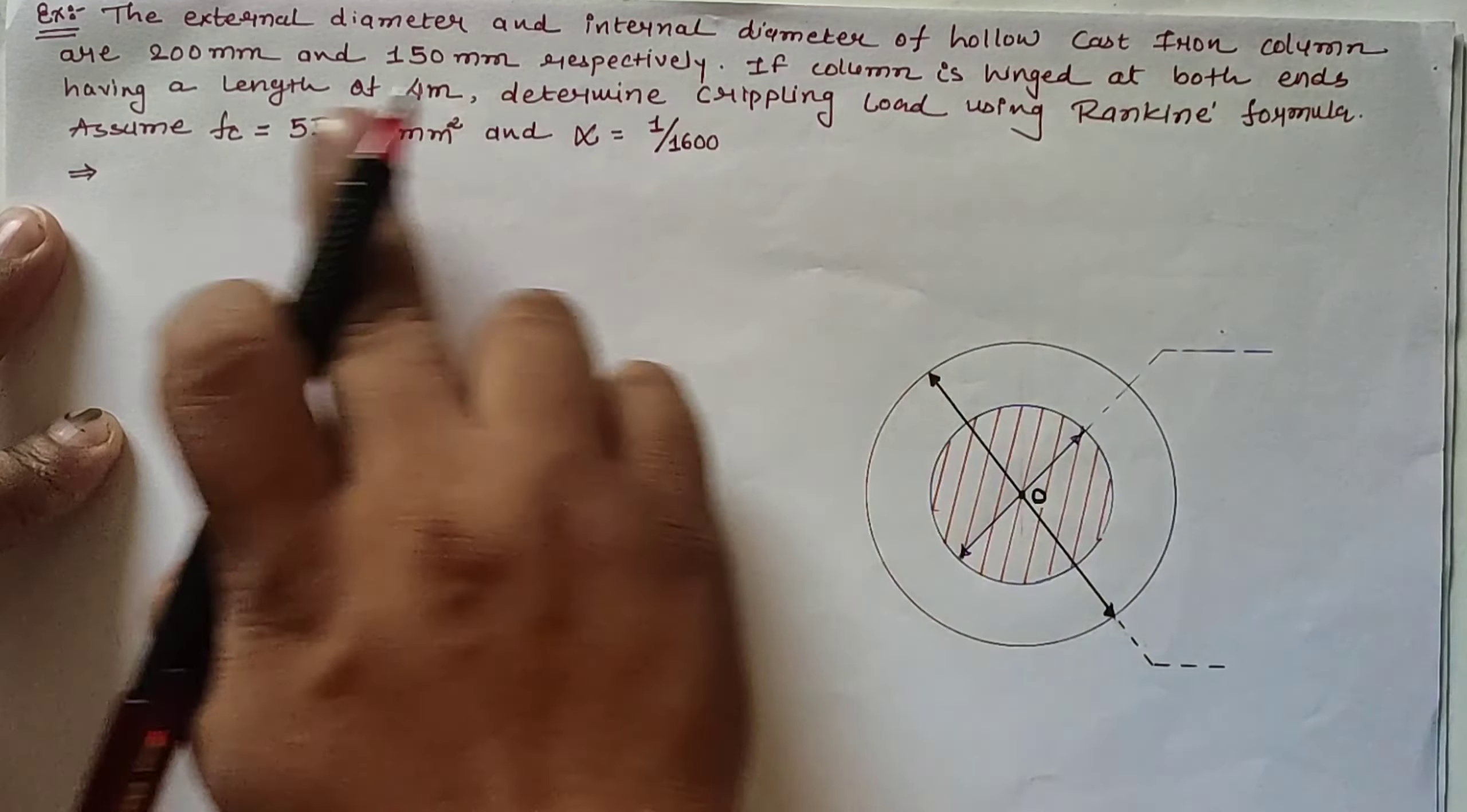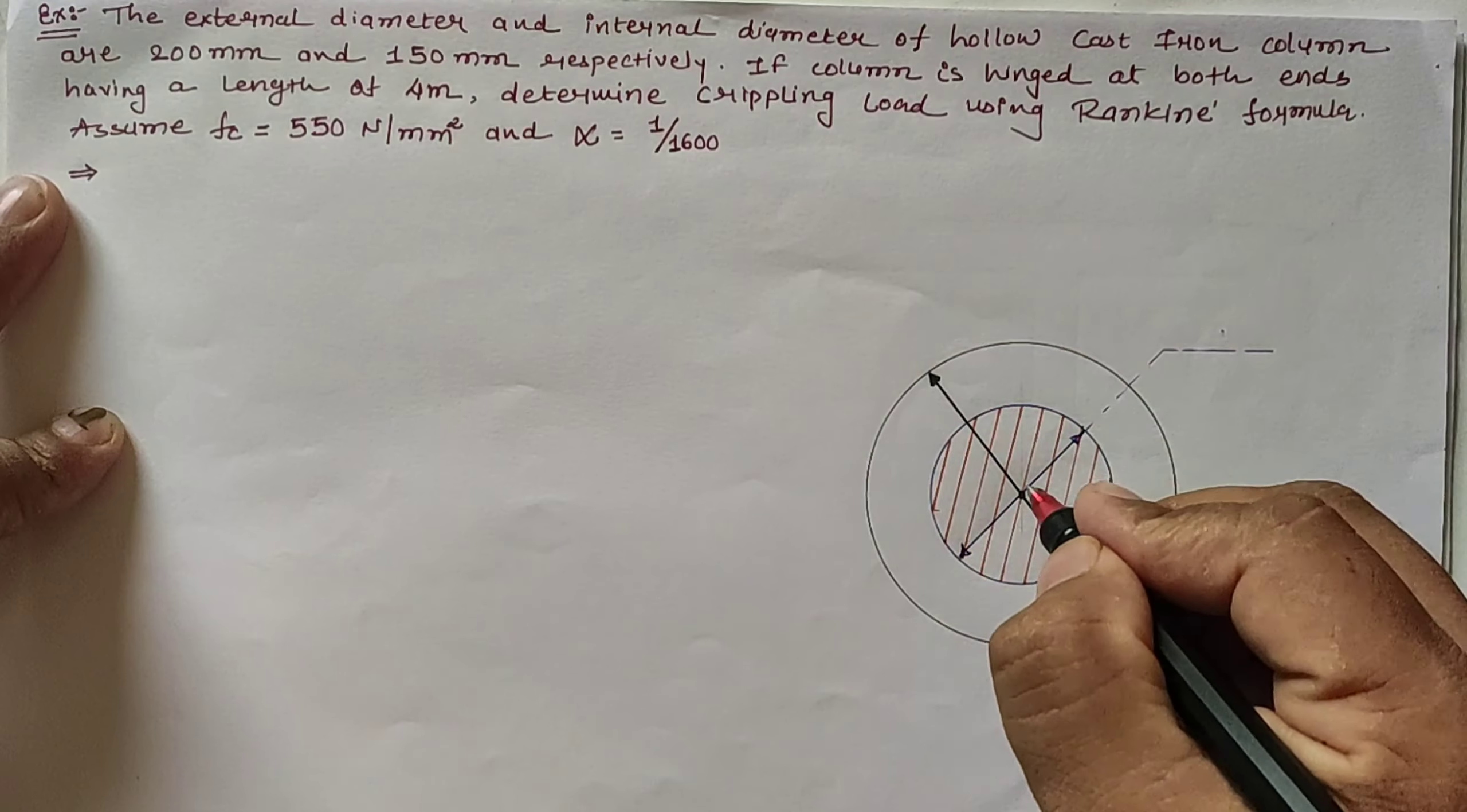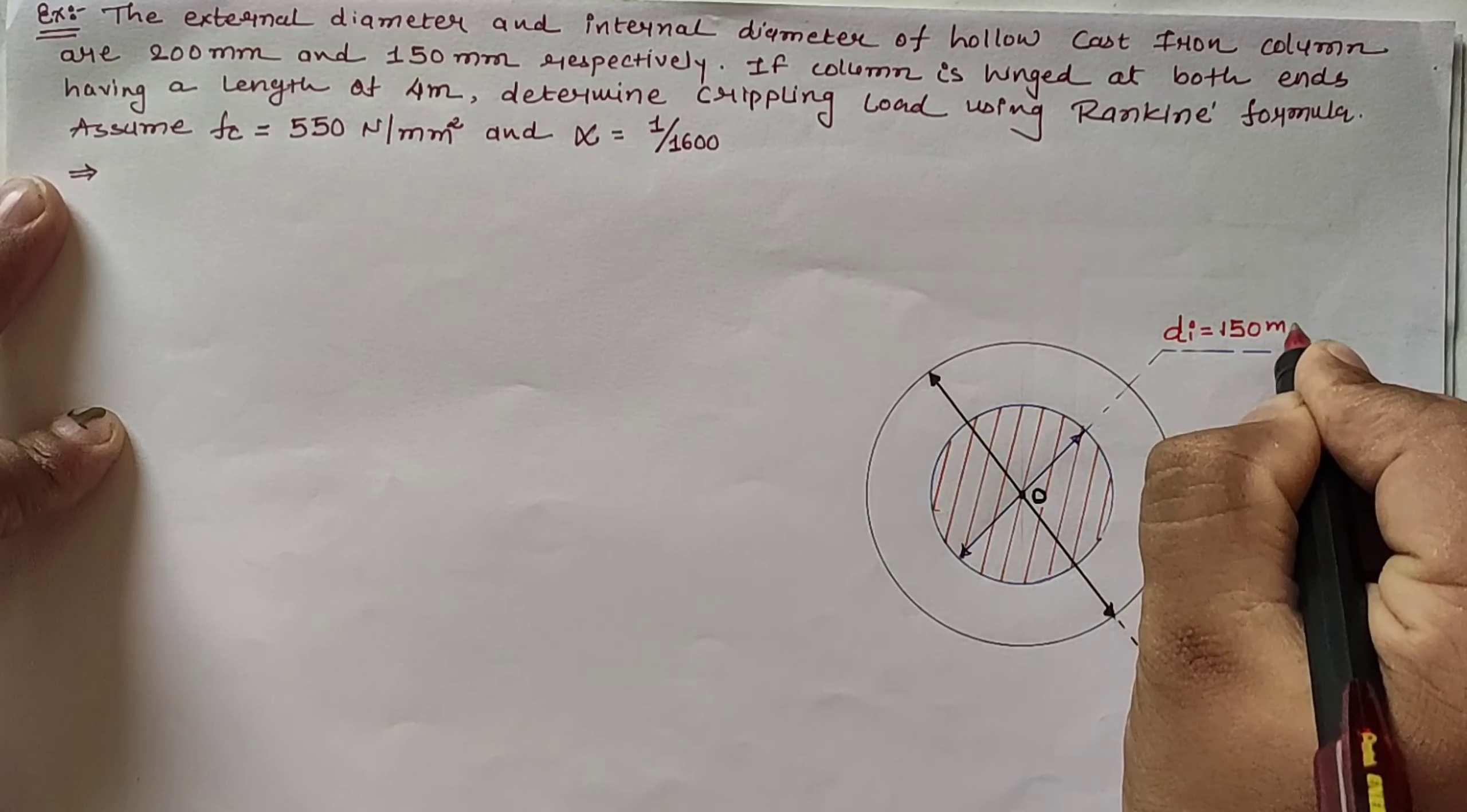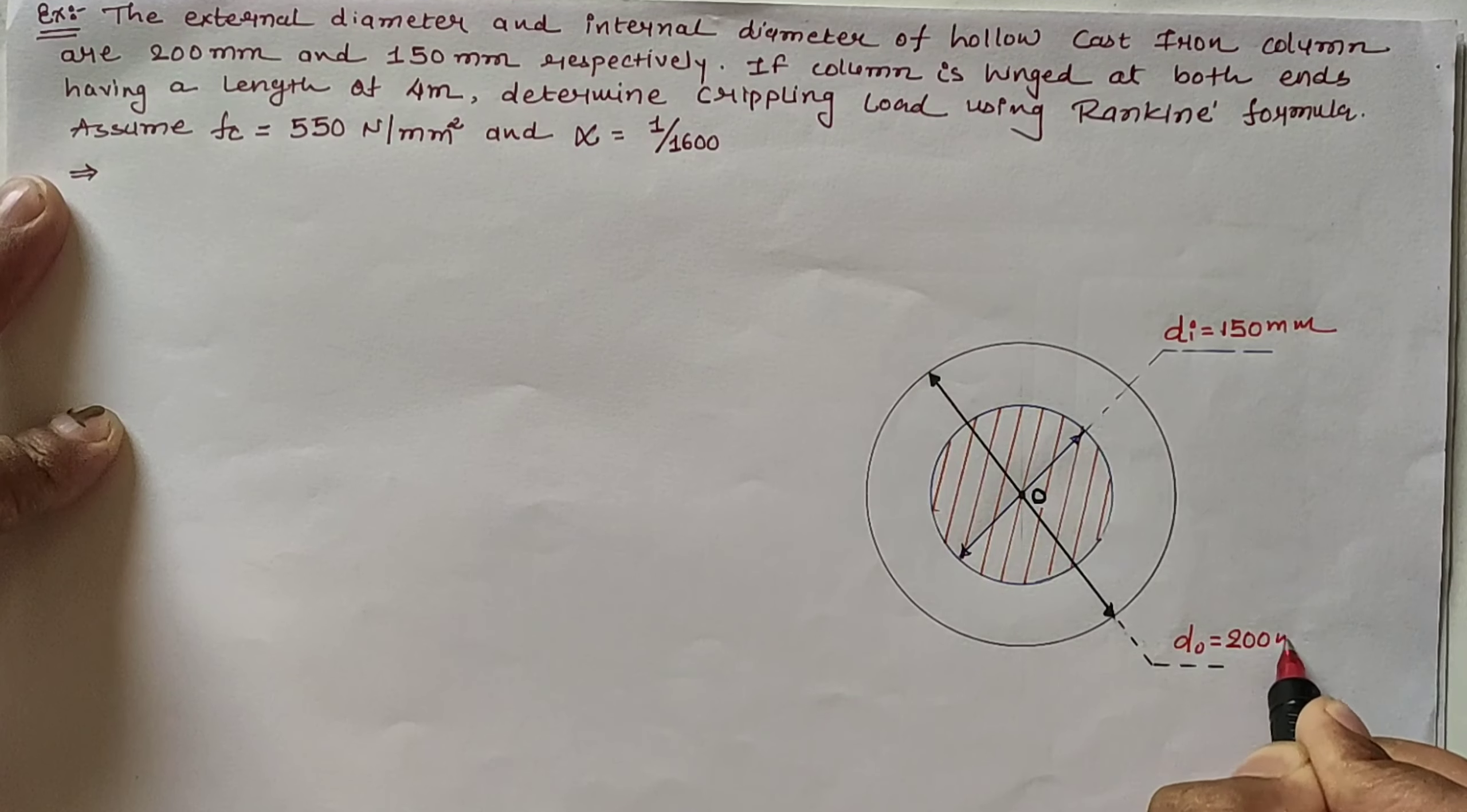The cast iron column has 200mm and 150mm diameter as external and internal respectively. The internal diameter Di is given as 150mm, while the external diameter D₀ is given as 200mm.